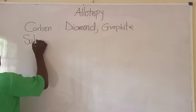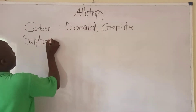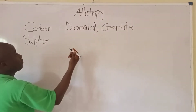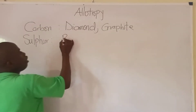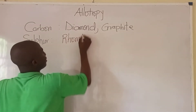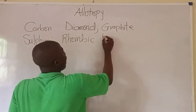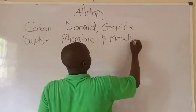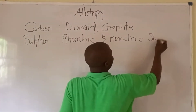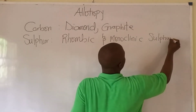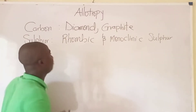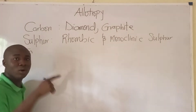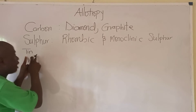Let's talk about other elements and their allotropes, like the likes of sulfur. Sulfur basically exists in different forms like the likes of rhombic and monoclinic sulfur. We also have other elements like the likes of tin.